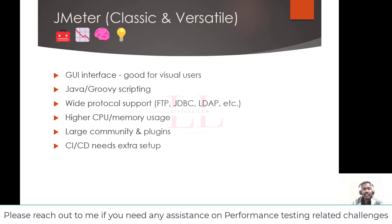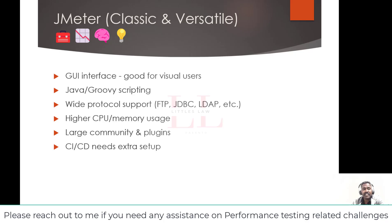JMeter is the classic and versatile option. It has a graphical user interface (GUI) where you drag and drop elements, configure them visually, and build your test plan like a flowchart — samplers, listeners, config elements, pre- and post-processors, and so on. The benefit is it's great for visual learners, non-developers, and those who prefer a GUI-driven approach. It's very easy to get started with basic tests.